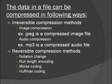There are two types: image compression and audio compression. As we all know, JPEG is a compressed image file, and also audio compression—for example, MP3 is a compressed audio file. Reversible compression methods include notation change, run length encoding, Morse coding, and Huffman coding.